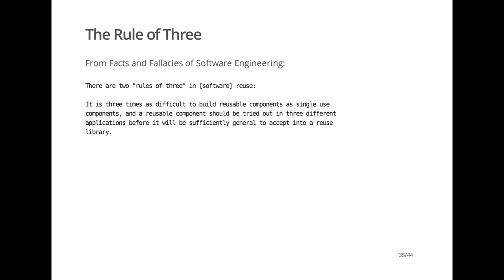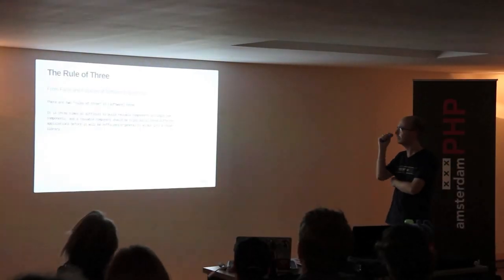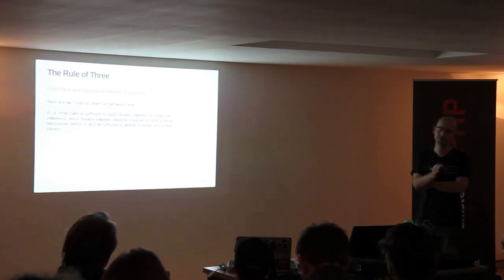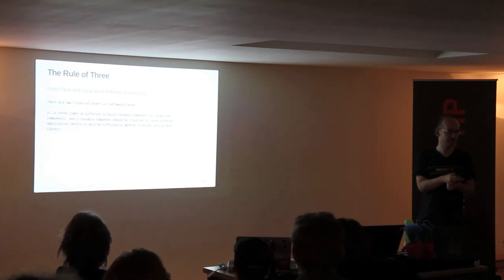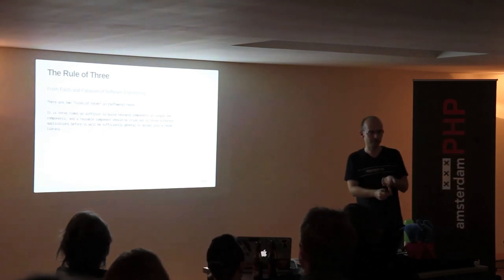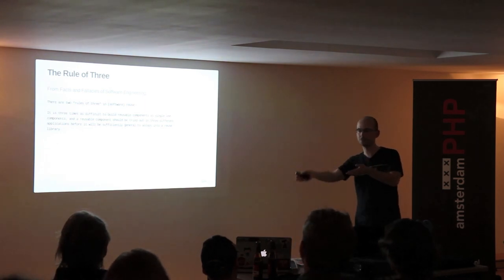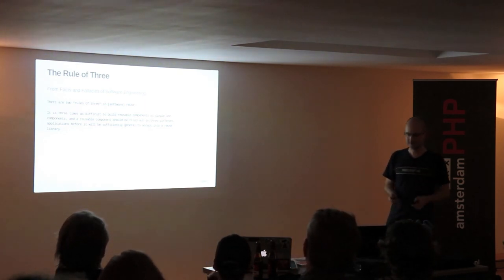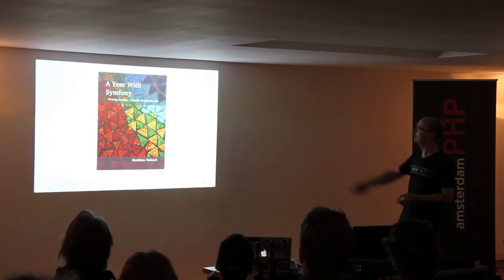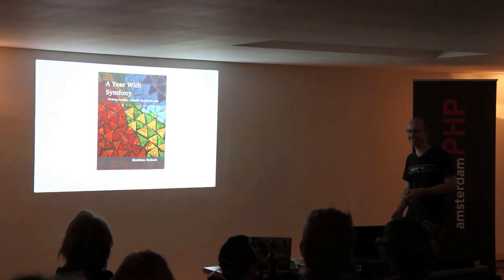The last thing I'd like to mention is the Rule of Three, from Facts and Fallacies of Software Engineering: it is three times as difficult to build reusable components as single-use components, and a reusable component should be tried out in three different applications before it will be sufficiently general to accept into a reuse library. I think this is true — there are a lot of differences between project-specific code, library code, code reused within the same company, and code released as open source software.